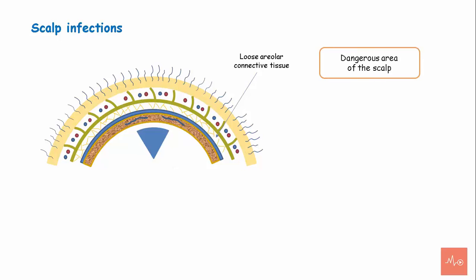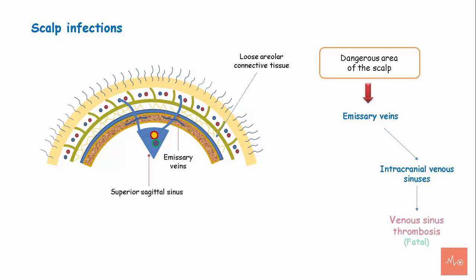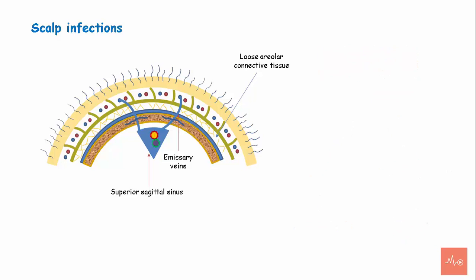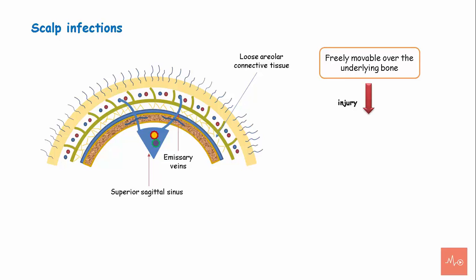The loose areolar connective tissue is considered a dangerous area of the scalp. The emissary veins can carry infection from the outer layers to the intracranial dural venous sinuses, which can lead to venous sinus thrombosis — a fatal condition. If infection spreads to the bone, it can lead to osteomyelitis. The loose areolar connective tissue is freely mobile over the underlying bone, so blood or pus can collect in this layer and spread over long distances.